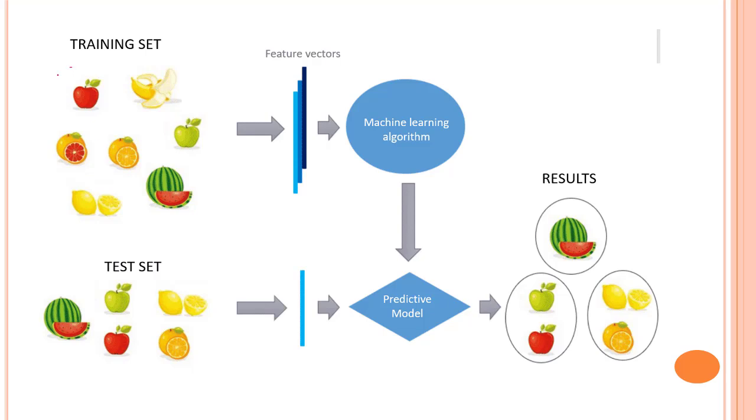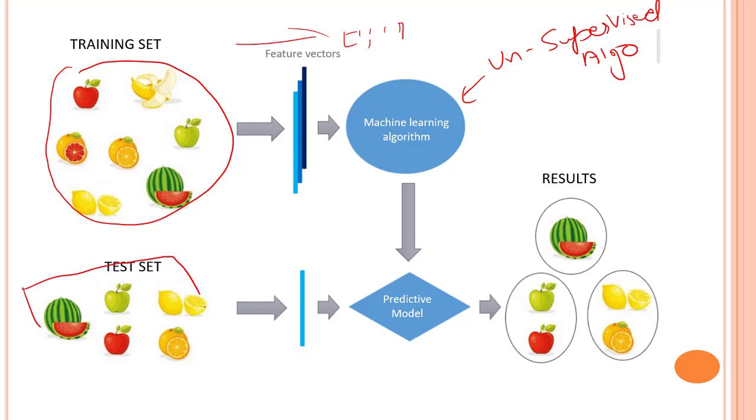So this is the training data, here we have a bunch of vegetables. We just pass out the vectors, feature vectors if you recall, we have already talked about what are vectors in previous courses. And the training set is then passed into our unsupervised learning algorithm. And then this algorithm predicts out the results. So we pass in the test set.